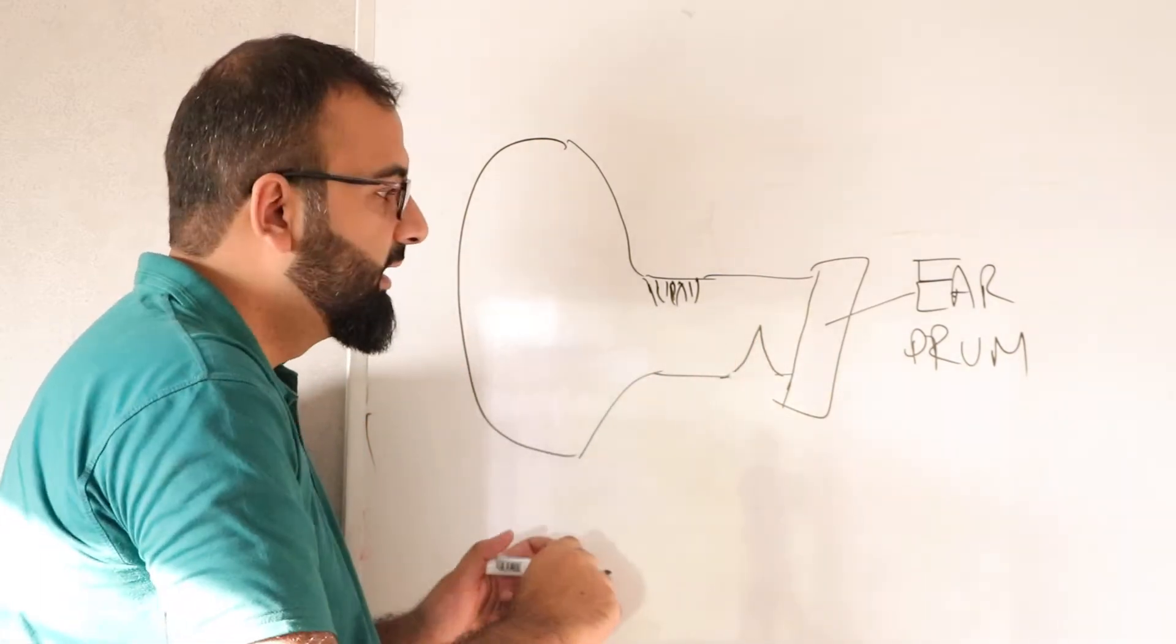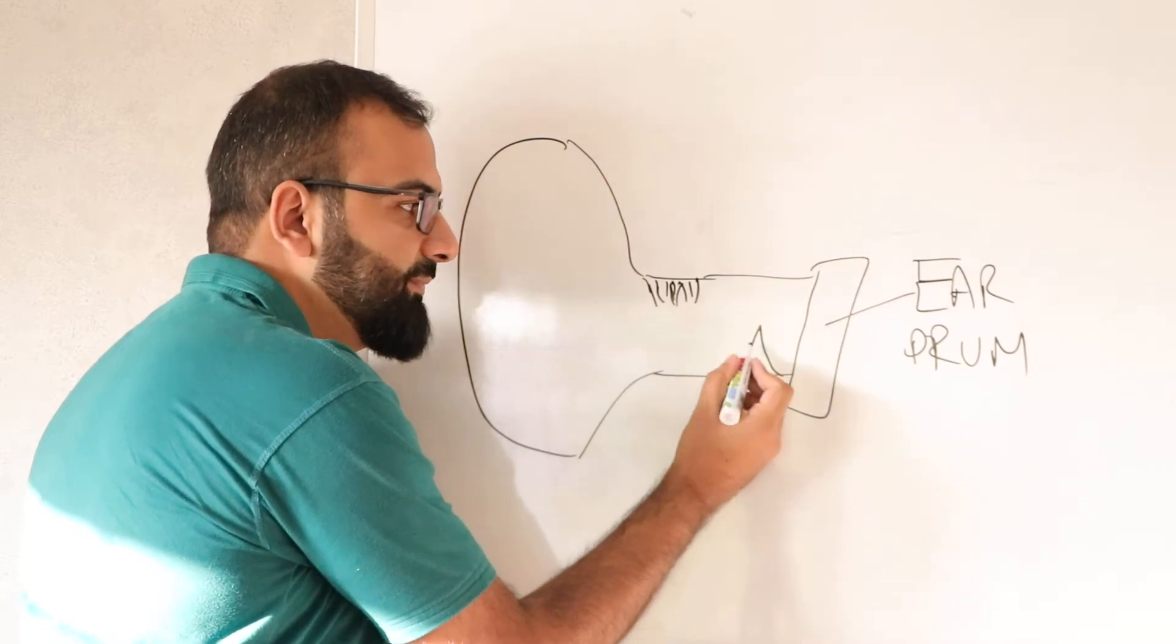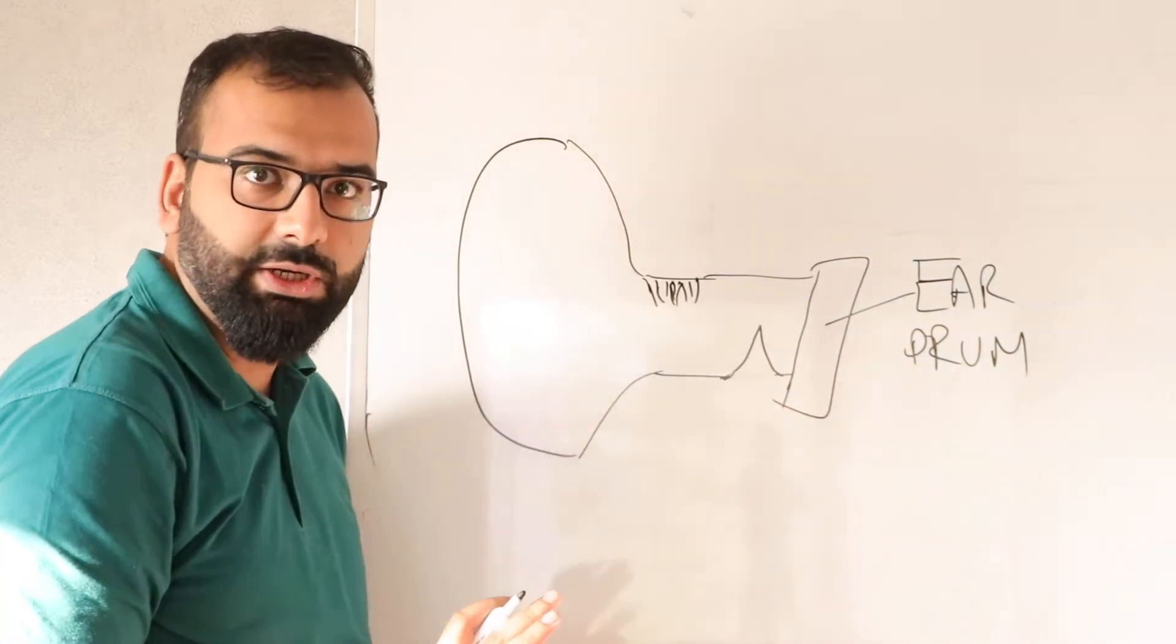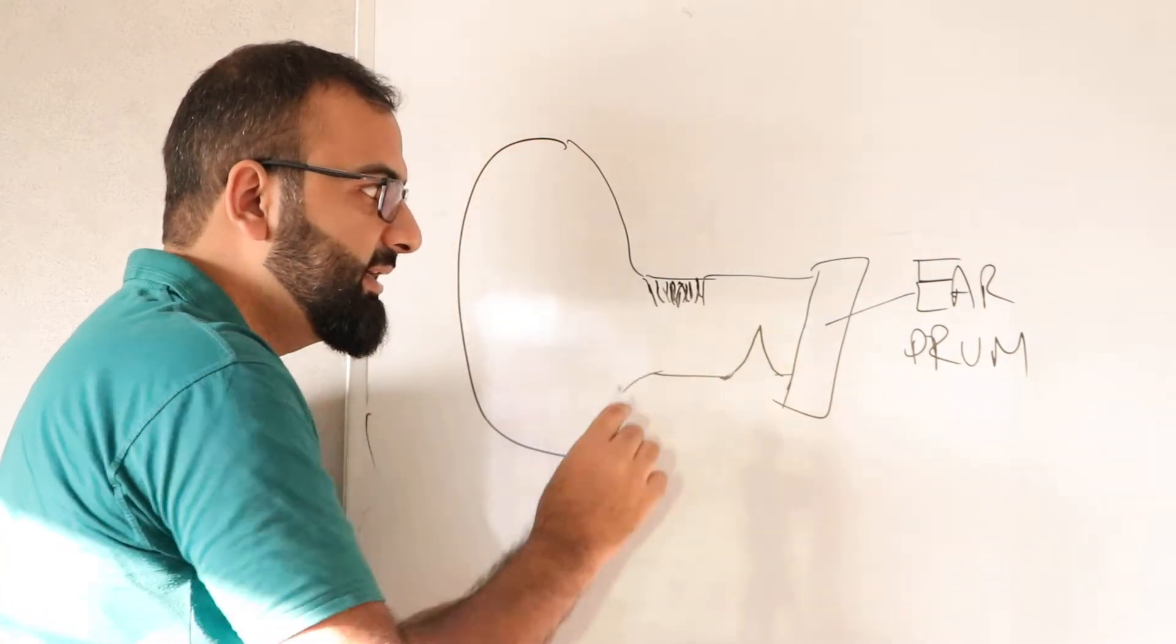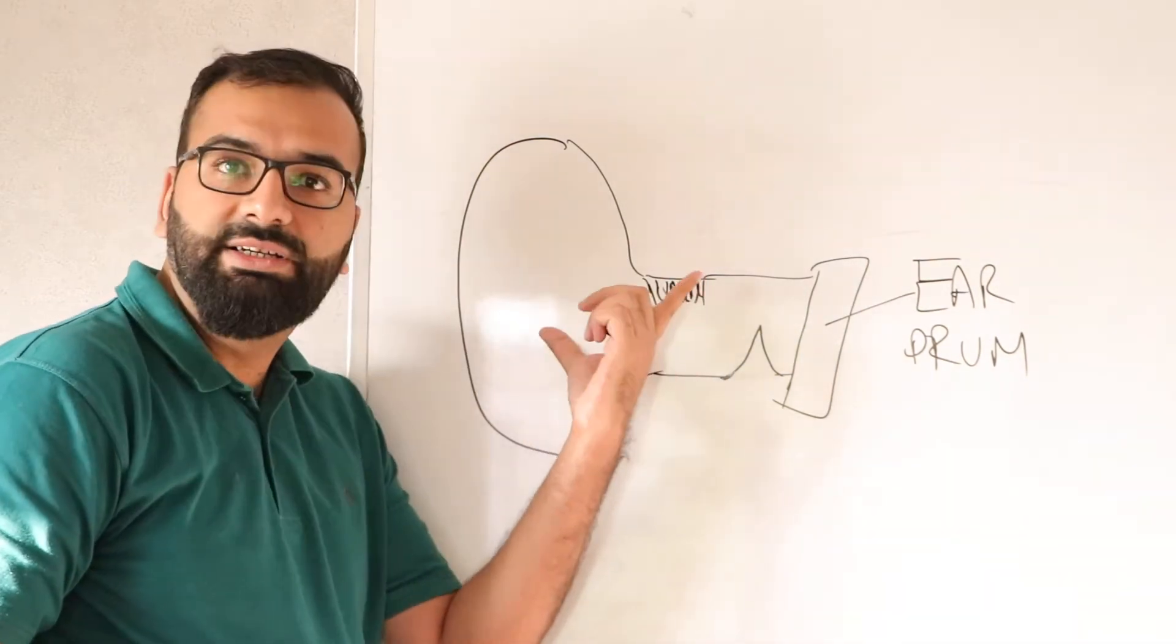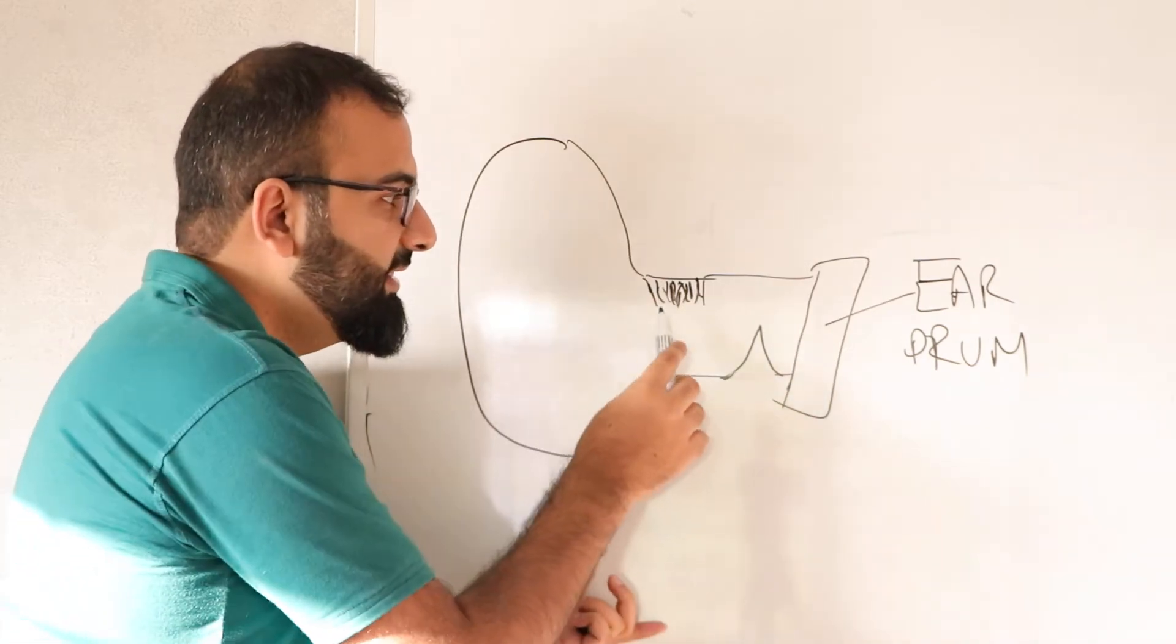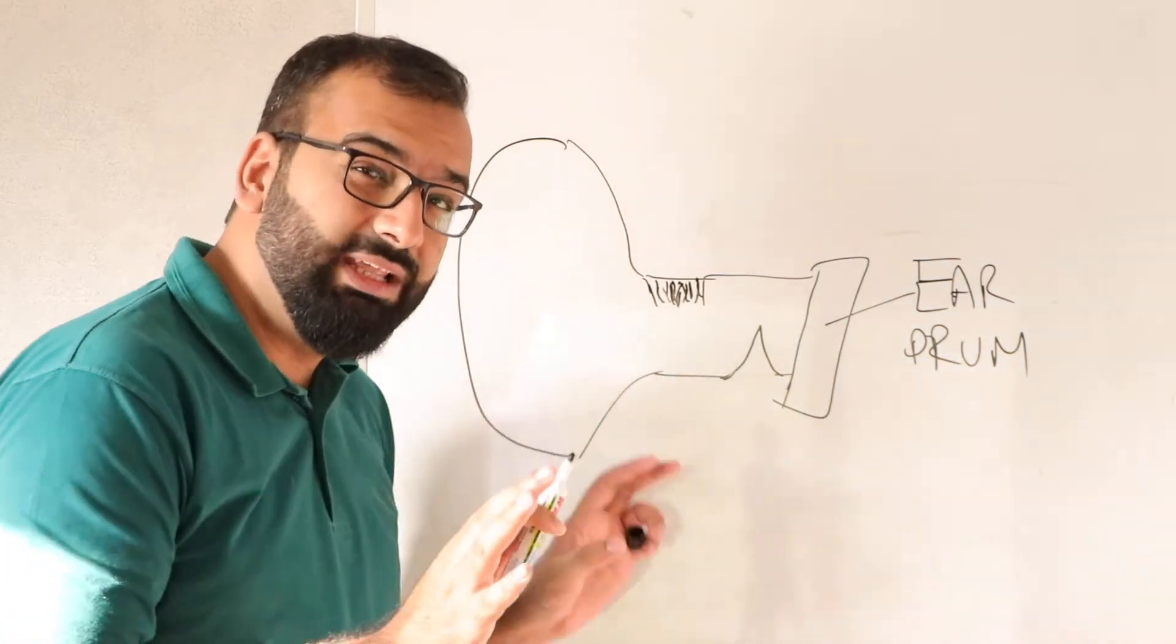As you can see, when you move from the outer part to the inner part, there is a narrowing here just before the eardrum. All the glands in the ear are in the outer one-third region, and the wax is produced only in this outer one-third region of your ear.